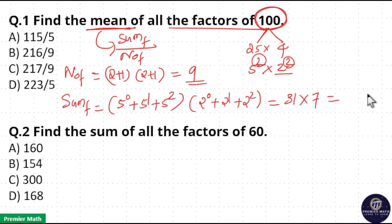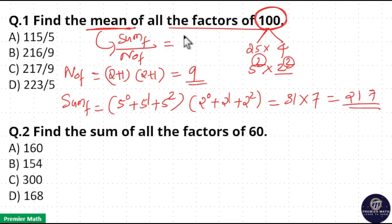31 into 7 is equal to 217. Then mean of factors of 100 is equal to 217 divided by 9. Option C is your answer.